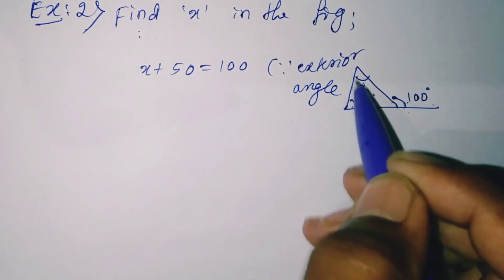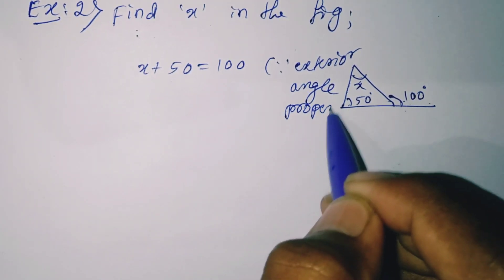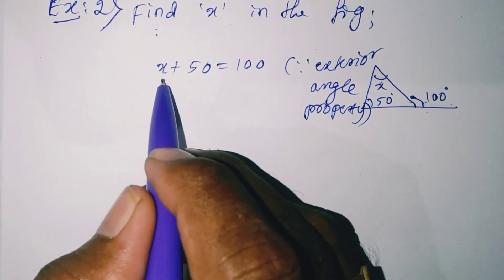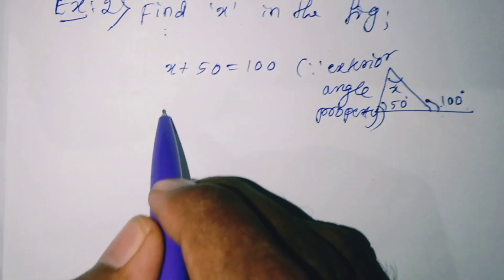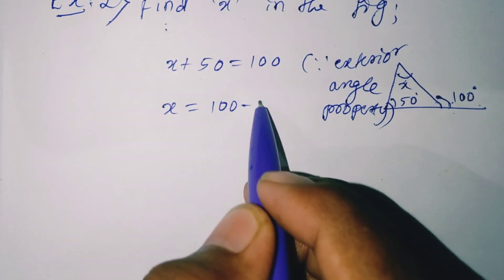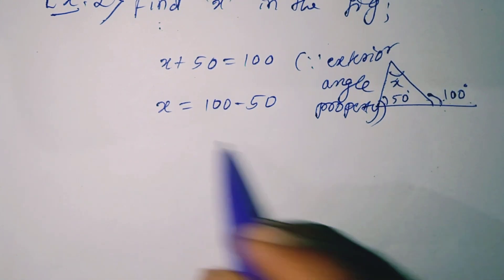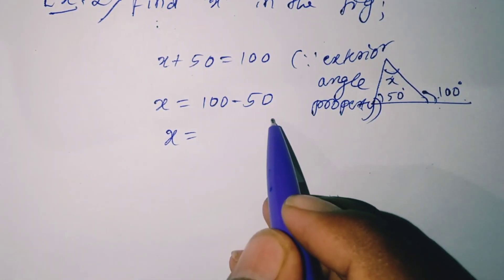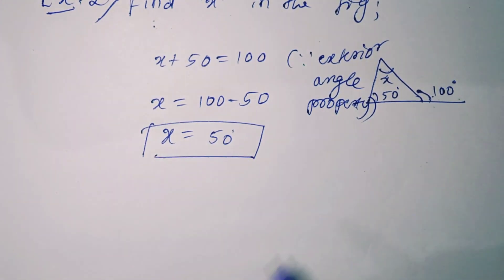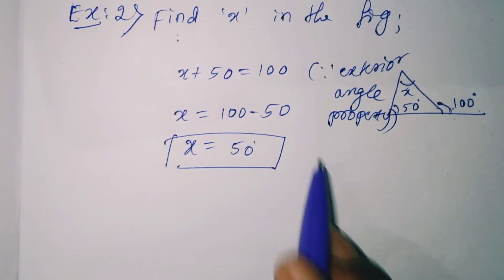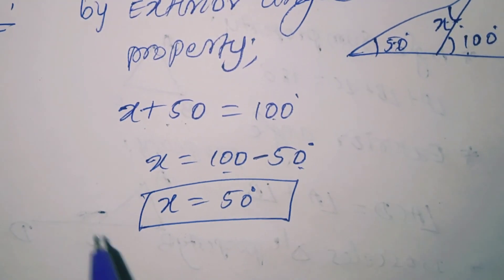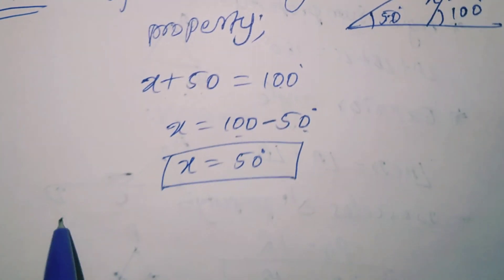Keeping x as the unknown, x equals 100 minus 50, which gives x equals 50. So the unknown value x is 50 degrees.